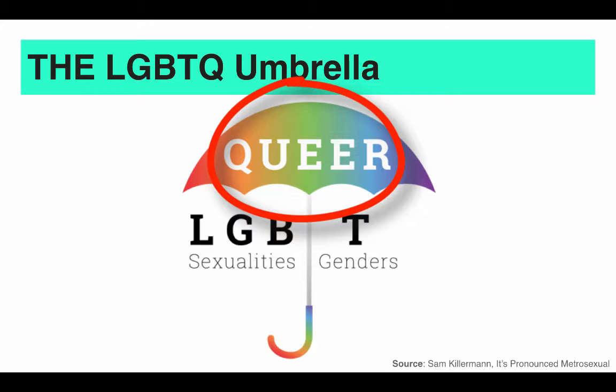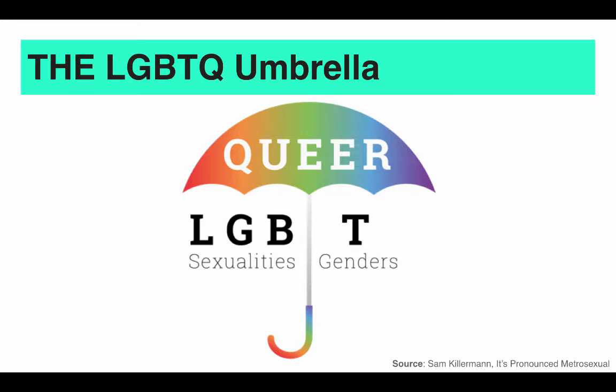The term queer means different things to different people. For some it describes sexuality, for others gender, and for others it might express both. Sexual identities or sexual orientations are ways to categorize and define who we are attracted to romantically, sexually, or otherwise. Gender identities are ways to categorize and define genders.